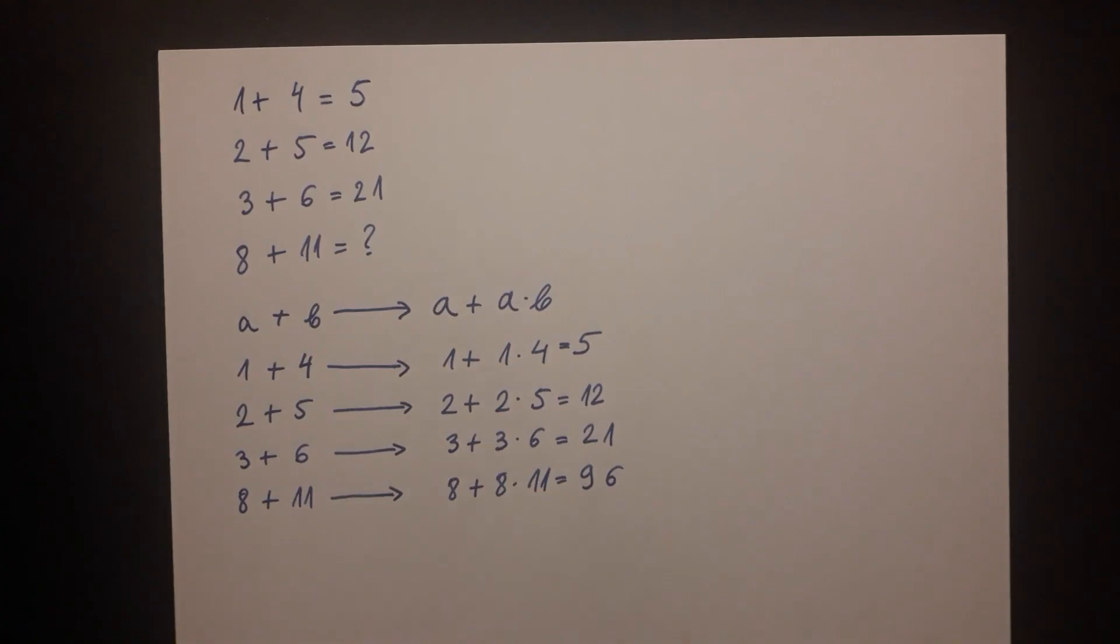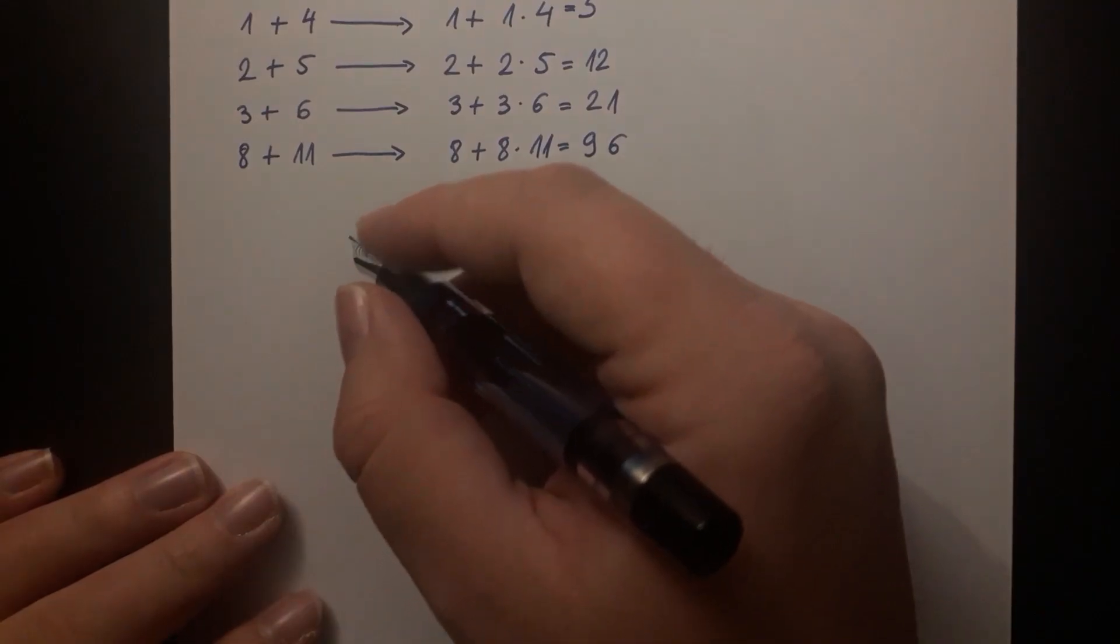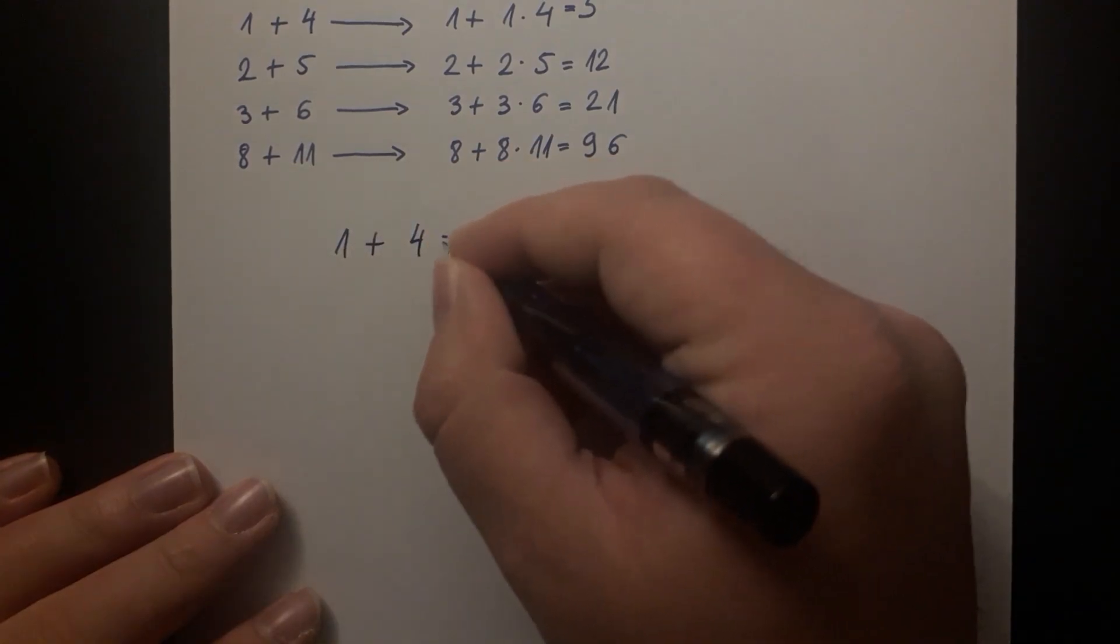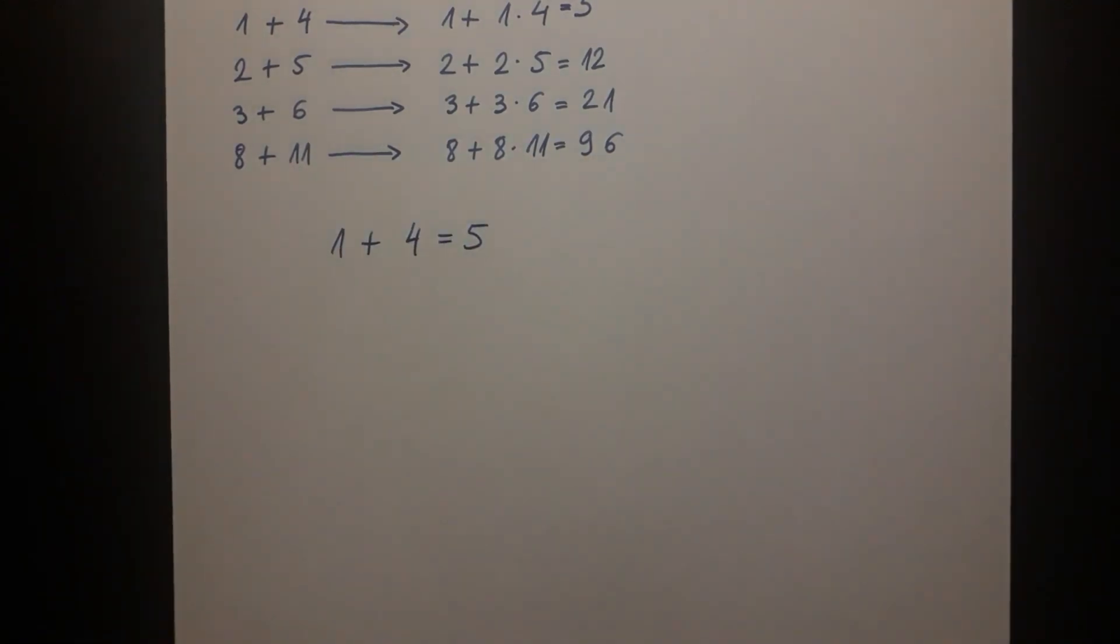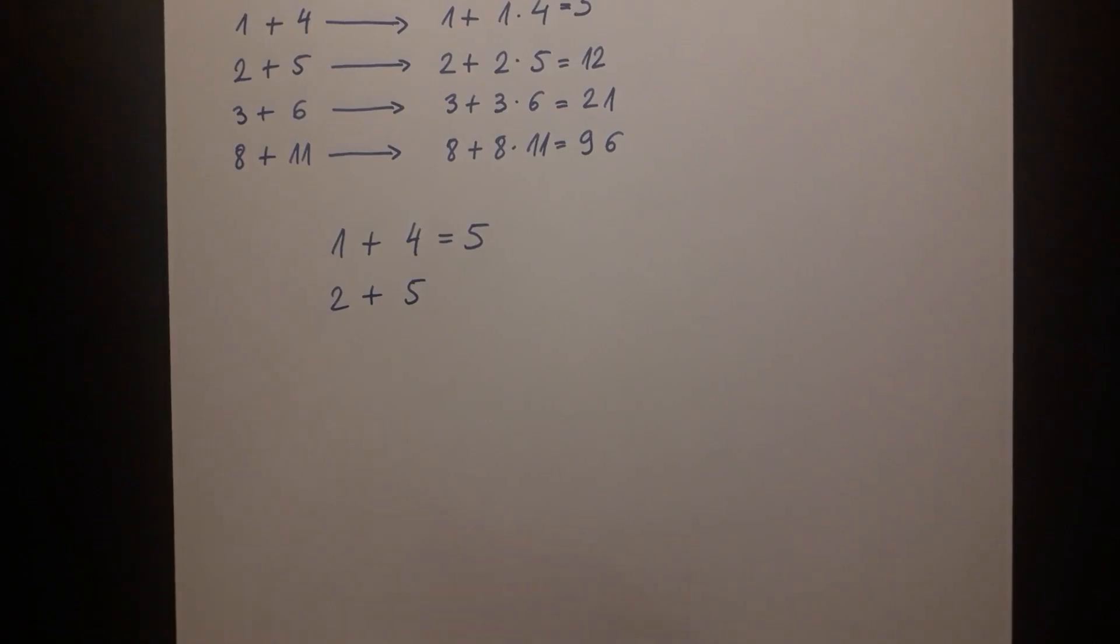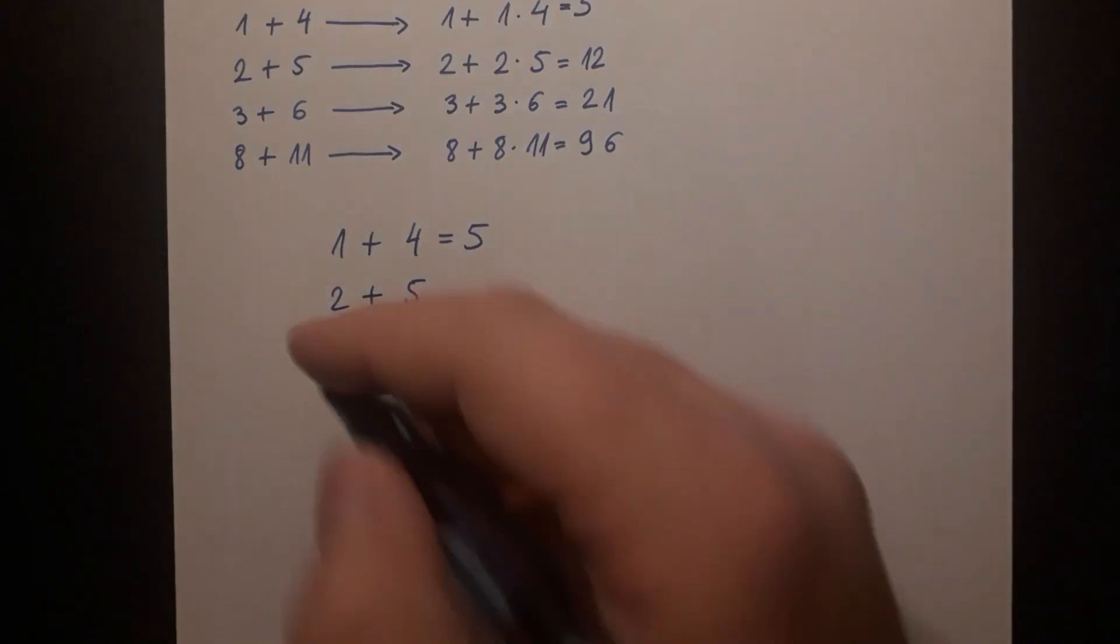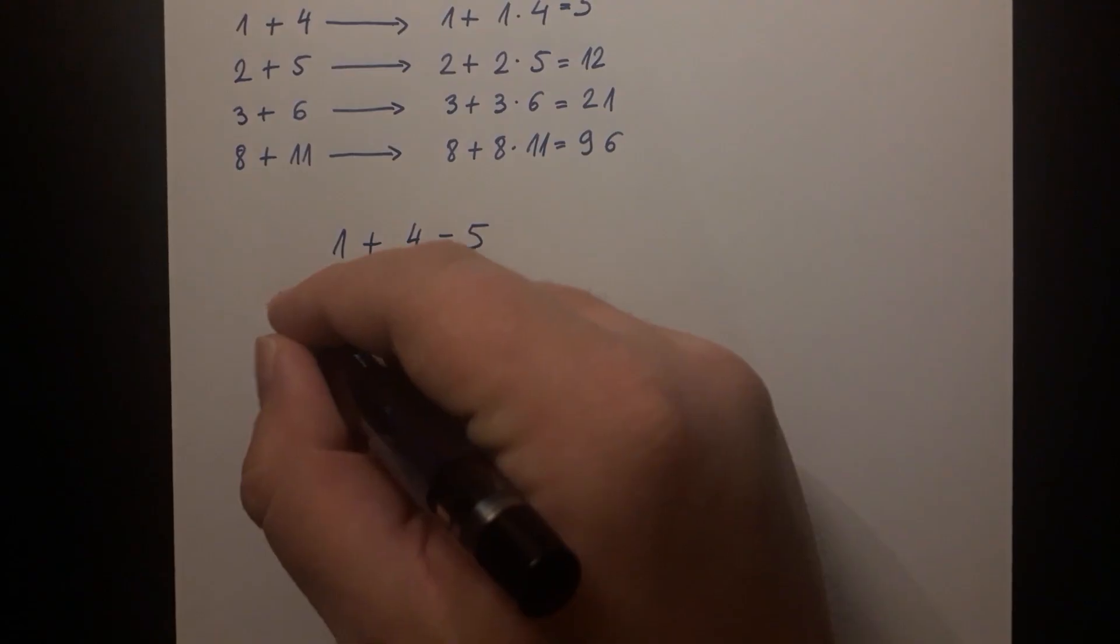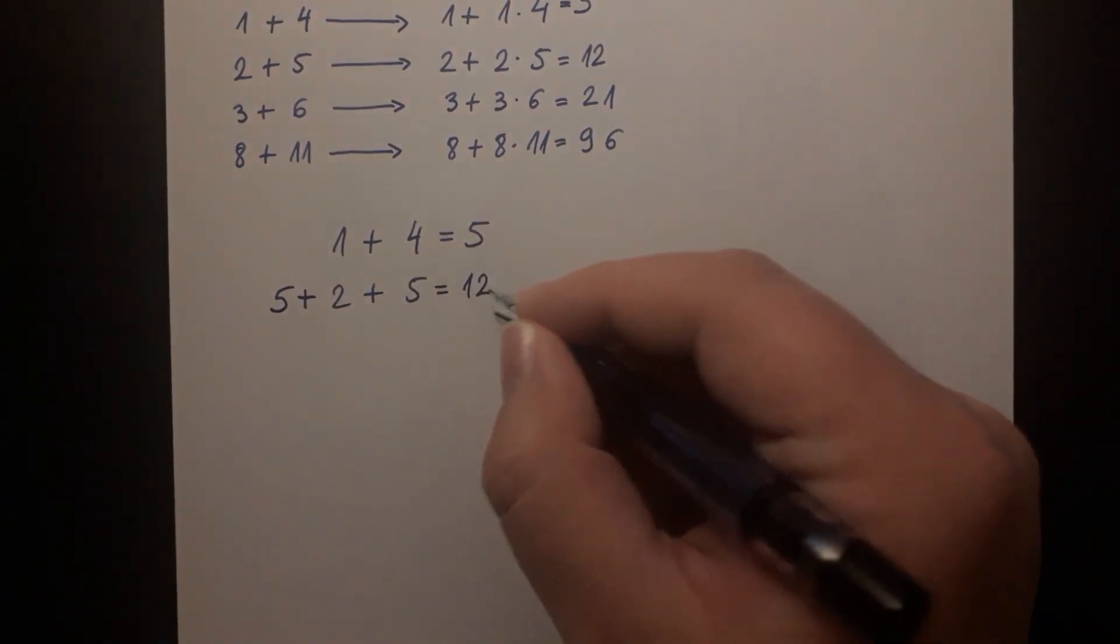The approach in this case is to interpret the puzzle as a running total where you add up the numbers from each line. The first line of 1 plus 4 is equal to 5 is a correct mathematical result. The second line where you have 2 plus 5 you should preface that by adding the result of 5 from the previous line and that is equal to 12.